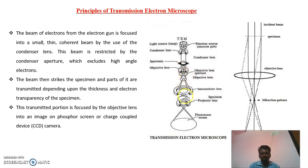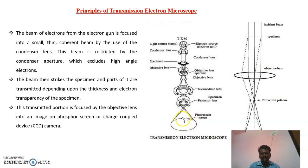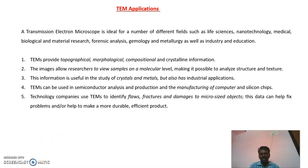The image then goes down to the phosphorous screen, generating light on it. The dark area of the phosphorous screen corresponds to a lesser number of transmitted electrons, and the lighter area of the phosphorous screen corresponds to highly transmitted electrons. This is the working principle of TEM.